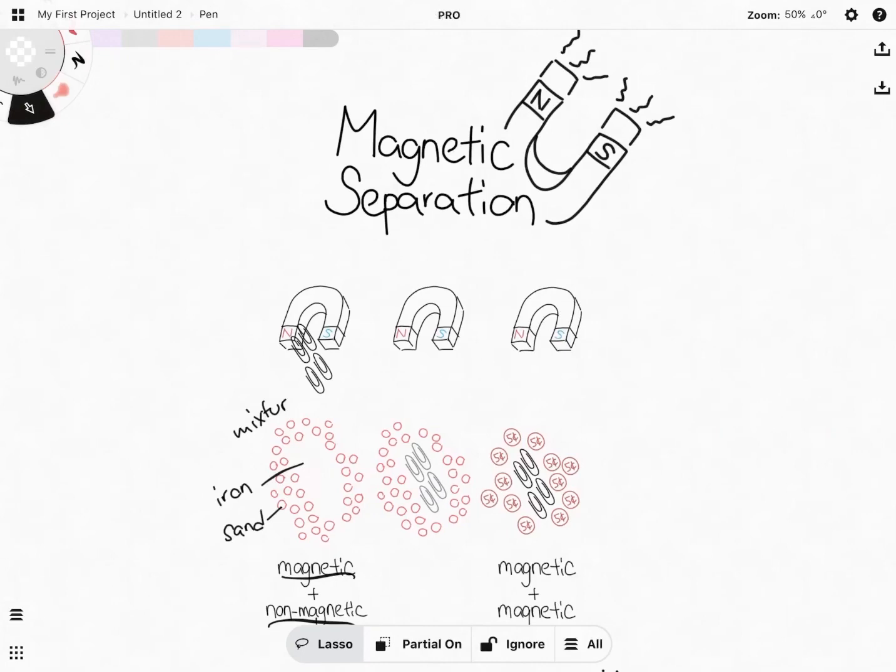And in doing so, I've separated this mixture into two things. Purely just the iron paperclips and as well as the sand. They've been separated. This is only possible because one of the substance is magnetic and the other substance is non-magnetic.